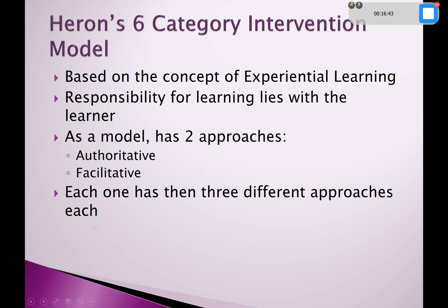Moving on, we look at Heron's Six Category Intervention model. The humanistic one was probably the heaviest theory. In your assignment you need to write about three models. Heron builds this model on the concept of experiential learning but also says that the responsibility for learning lies with the learner — they have to take control of their own learning. This ties in with the facilitator's role of getting the group to take ownership.